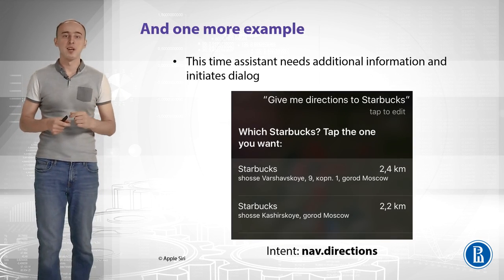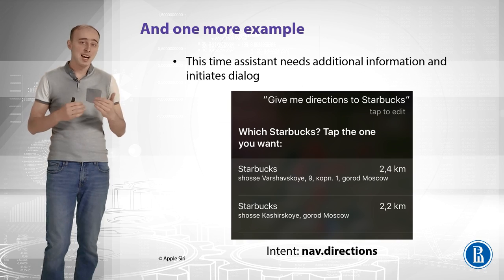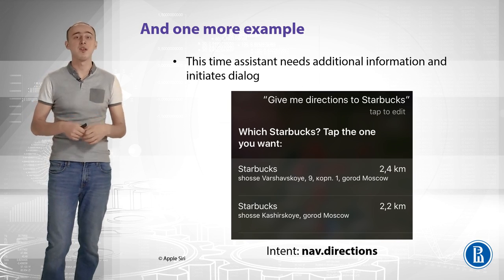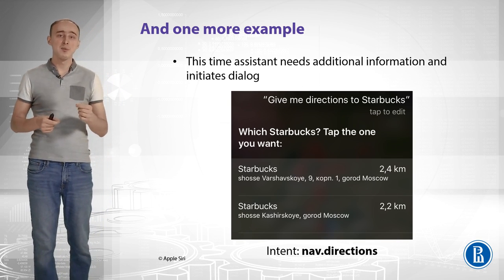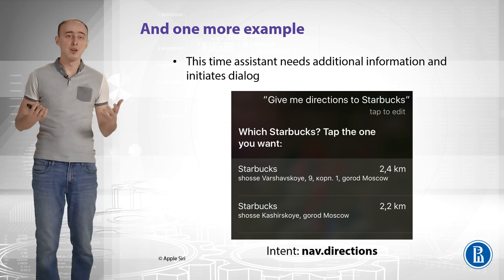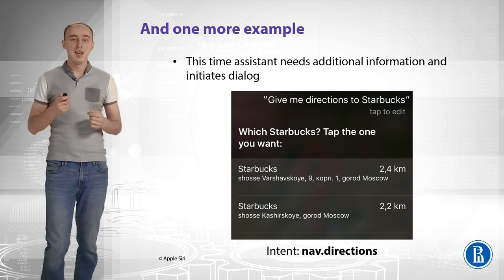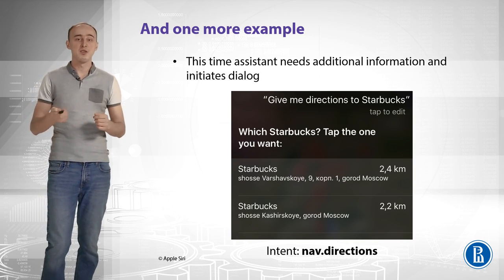One more example: 'Give me directions to Starbucks.' This time I don't say that I need the time or the nearest Starbucks, so the system doesn't know which Starbucks I want. That's when the system initiates a dialogue with me, because it needs additional information — like which Starbucks. This intent is 'navigation_directions.'